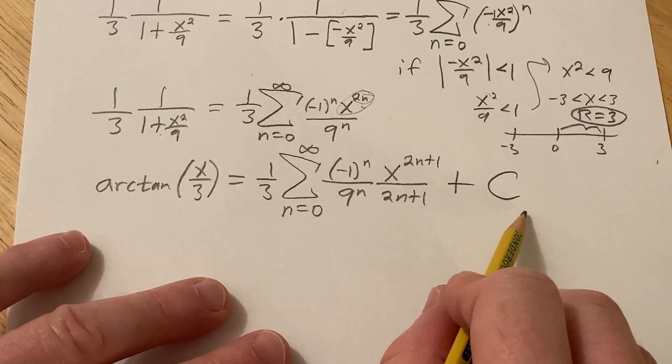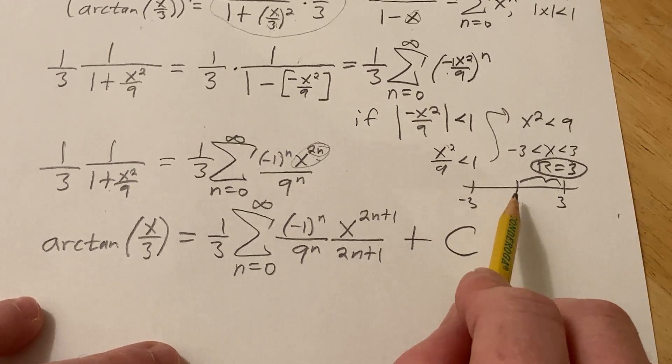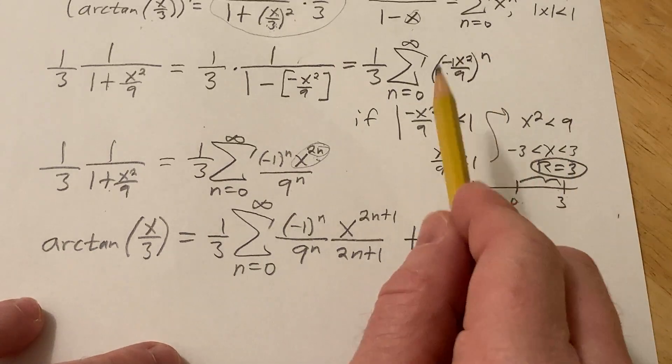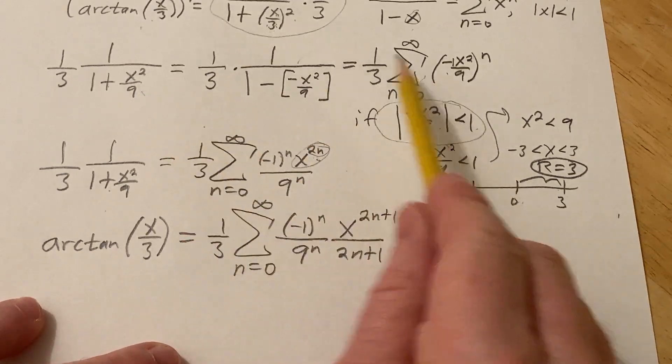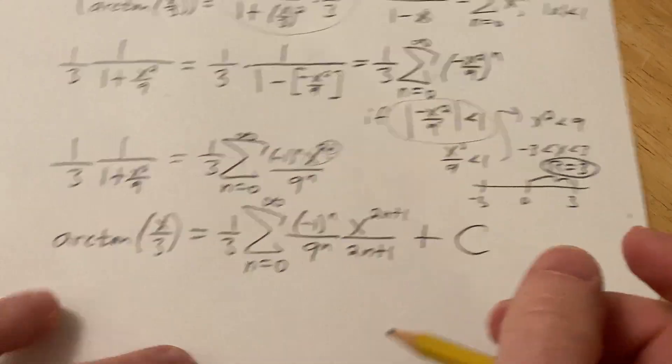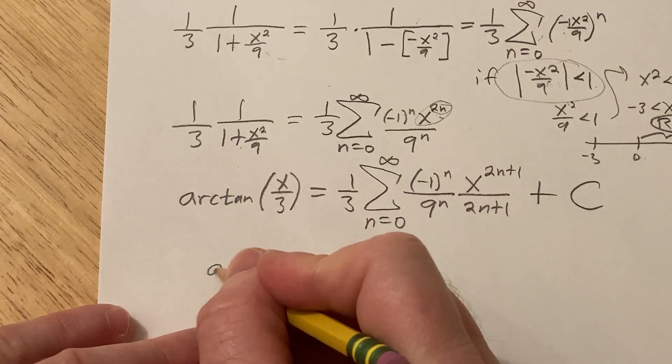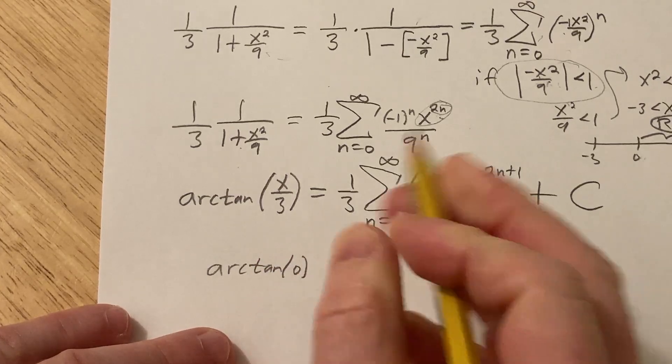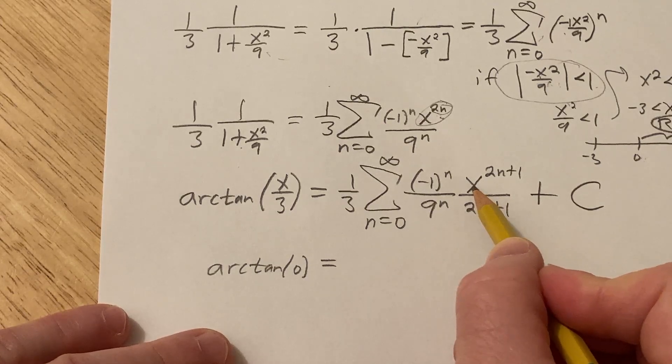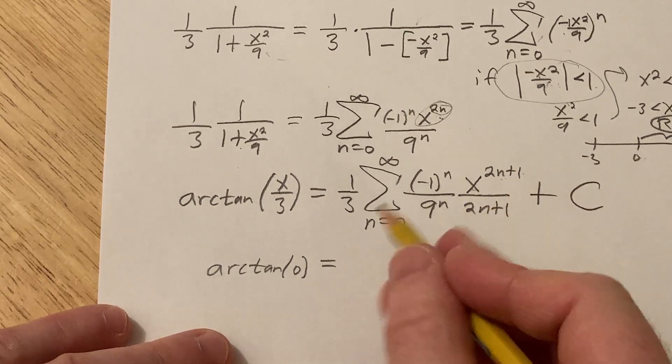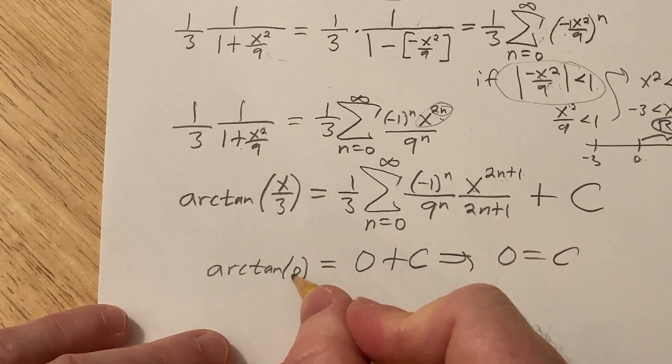So we should try to find C. I'm thinking we can plug in a nice value. 0 works because 0 is in the interval. In fact, it's the center of the power series. And a power series always converges at its center. But even more easily, you can see if you put a 0 here, this inequality is true for X equals 0. So this equation is valid for the choice of X equals 0. So I'm going to put in 0 here. So we get arctan of 0 over 3, which is just arctan of 0, which is 0. All of these are going to be 0 because for the first term, you'll get 0 to the 1, which is 0. So they're all 0. So therefore, we get 0 equals C because this is 0 as well.